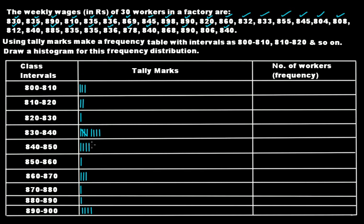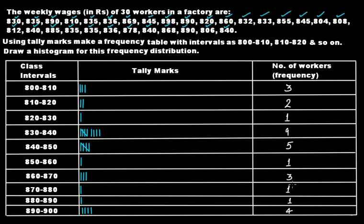Now we fill in the frequency column — the number of workers falling under each class interval. For 800 to 810, the frequency is 3. Then we have 2, then 1, then 5 plus 4 equals 9, then 5, then 1, then 3, then 1, then 1, then 1, and finally 4. So we are done with the grouped frequency distribution table.